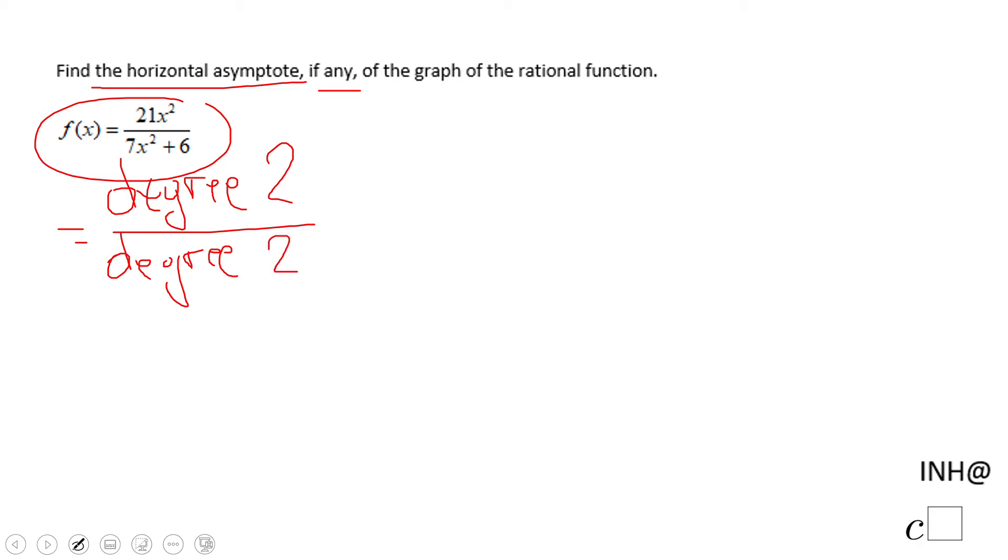So in this case, when the degrees are the same, we do have a horizontal asymptote, which is y equal to the quotient of the leading coefficients. In this case, 21 and 7, right? 21x squared, 7x squared. If you can simplify, in this case, we get 3.